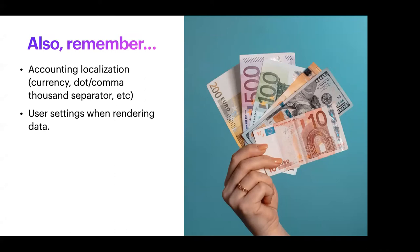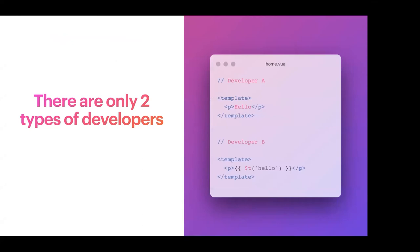Some other things to take note of is accounting localization. Currency display varies by region, and thousands separators when displaying numbers also need to be handled. If you're building a FinTech product, after storing numbers in the database as float or double, you need to ensure that on the front end it is rendered in a way applicable to that particular locale. Accounting software for people in some parts of the world may use a comma as a thousands separator while in other places a dot is used.